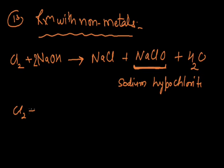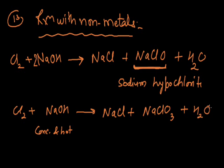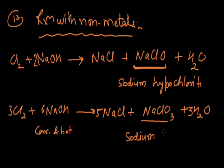When chlorine reacts with concentrated or hot NaOH solution, it will form sodium chlorate — we write 6 here and 5 here, and the main product is sodium chlorate. With normal or cold NaOH it forms sodium hypochlorite, but here we use concentrated and hot NaOH.